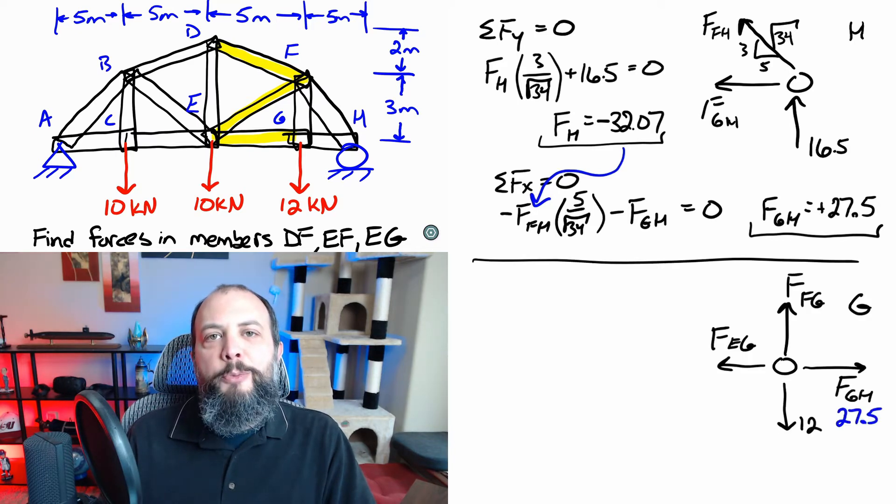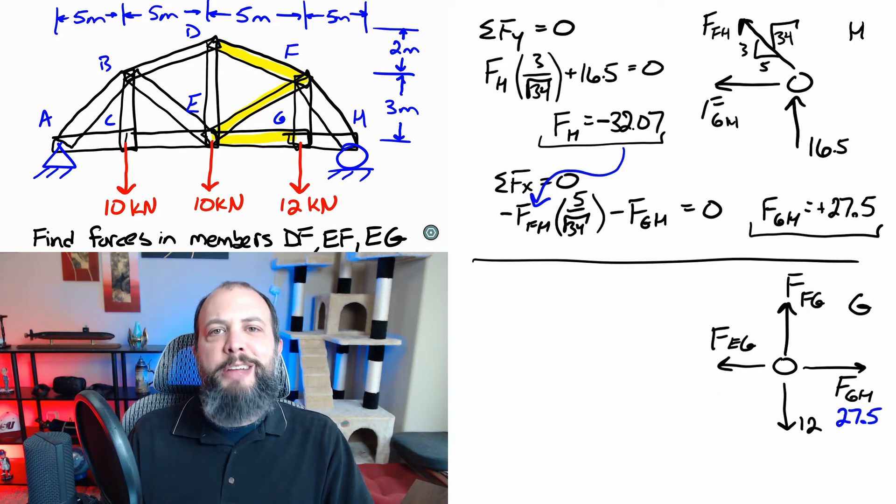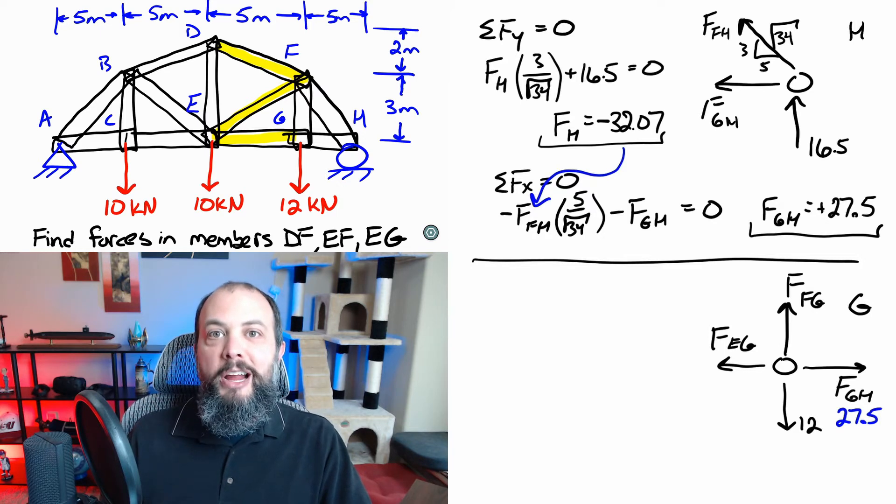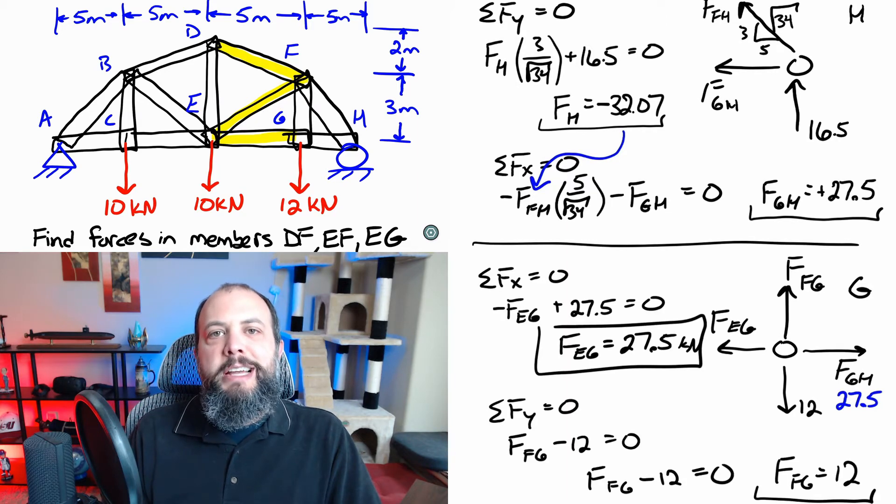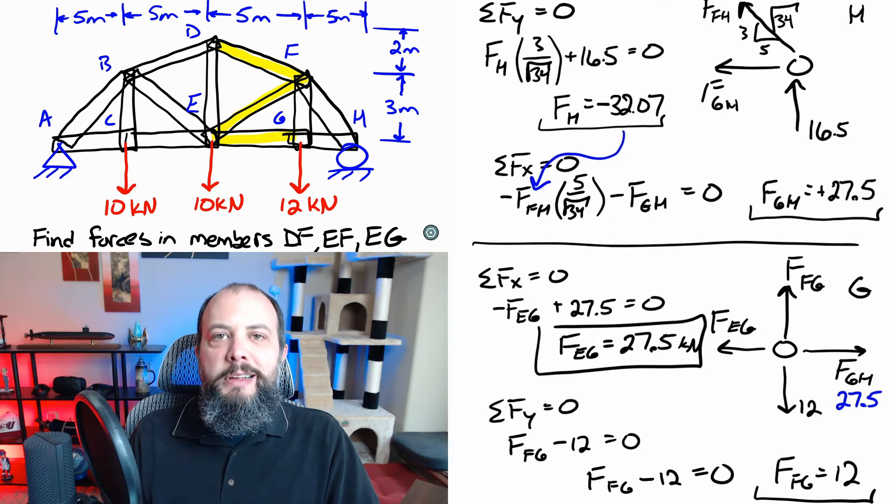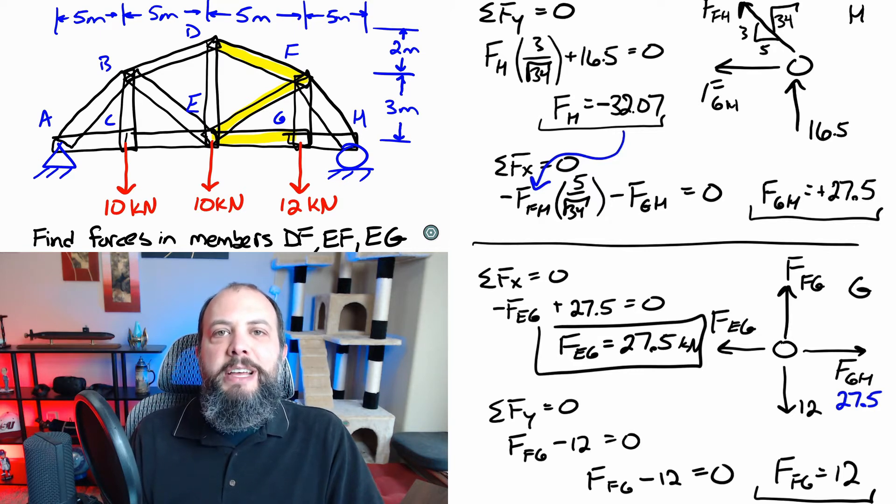I've drawn the free body diagram now for point F. You can always breathe a little sigh of relief whenever you see that you have no diagonal forces in a free body diagram that means that this part is going to be a lot easier than the rest of the problem. Writing out the equation the x and y direction as expected they're both fairly straightforward and we get one of the final answers and then another intermediate step in FFG.